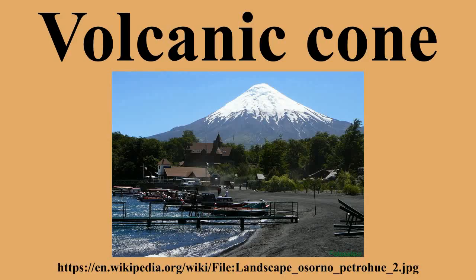Spatter cone. A spatter cone is a low, steep-sided mound that consists of welded lava fragments called spatter, which has formed around a lava fountain issuing from a central vent. Typically, spatter cones are about 3 to 5 meters high. In the case of a linear fissure, lava fountaining will create broad embankments of spatter called spatter ramparts along both sides of the fissure.